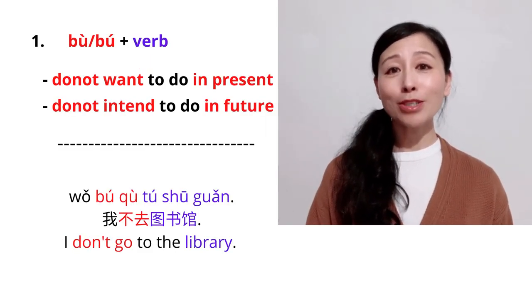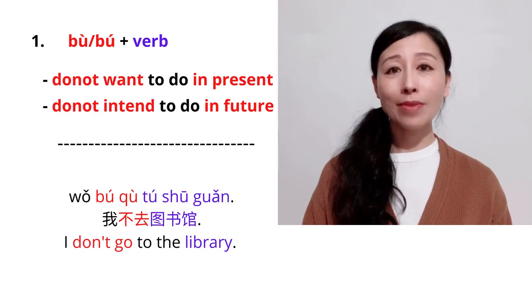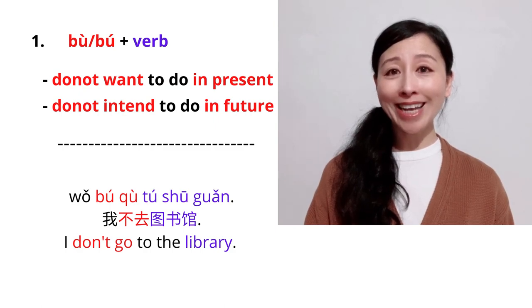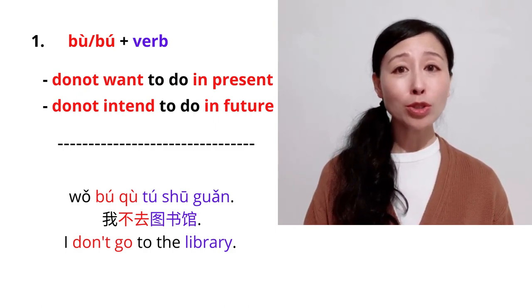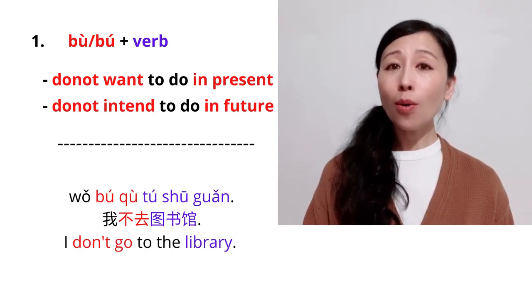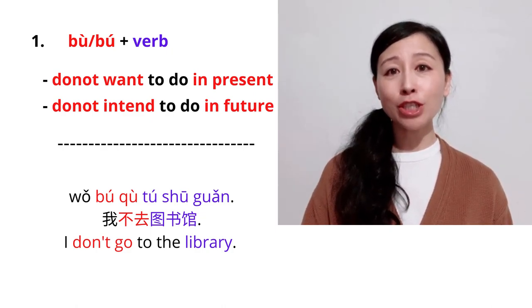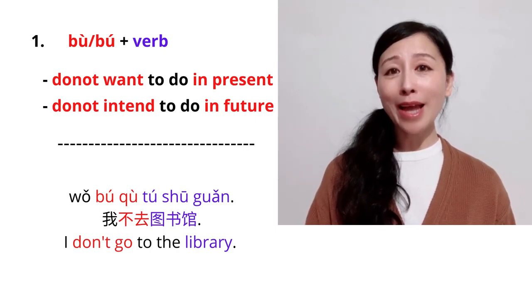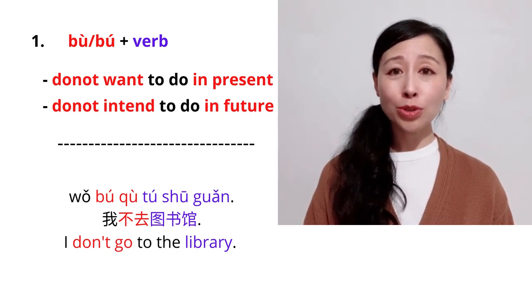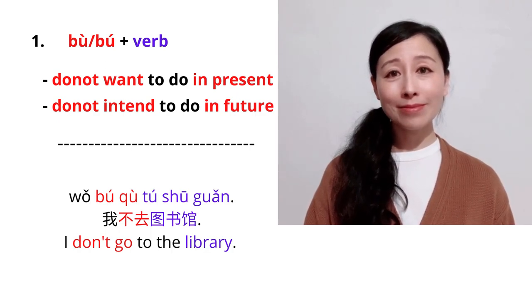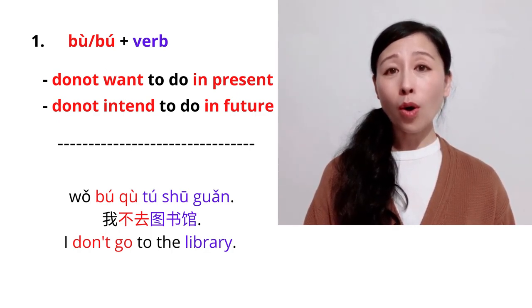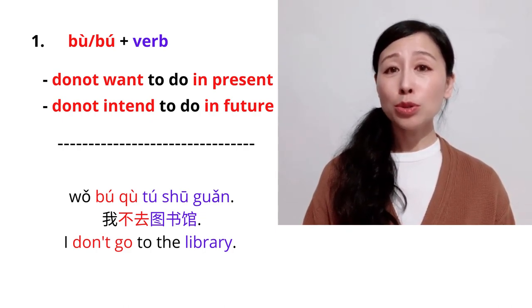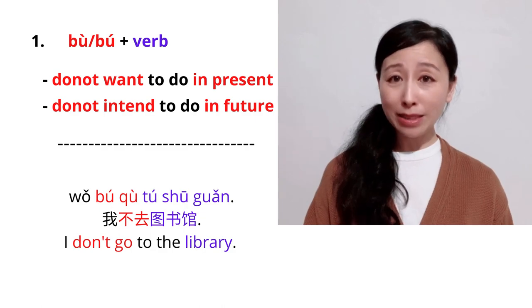Now let's talk about the first usage of bu. Bu can be placed in front of a verb. It's used to negate action that you don't want to do in present or you don't intend to do in the future. For example, I don't go to the library. Wǒ bù qù túshūguǎn. That means you don't want to go to the library at this moment.